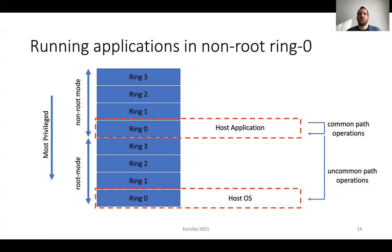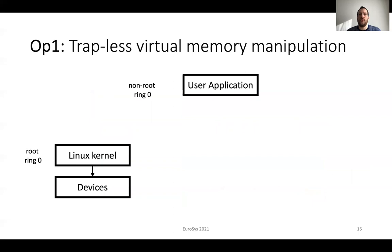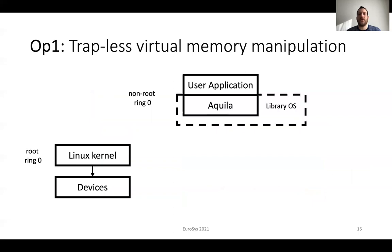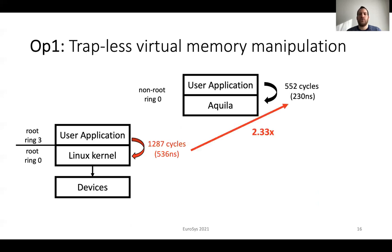Next, we provide more details on common and uncommon path operations. The first operation is about trapless virtual memory manipulation. Today, user applications run in root ring 3 and require a protection domain switch to ring 0 to access storage devices. We move user applications to non-root ring 0 and, combined with Akila, our library operating system handles all common path operations without the need for a protection domain switch. Akila also provides a way to handle uncommon path operations with a VM call to the host operating system. In this case, the hardware cost to serve a page fault is about 600 cycles, compared to traditionally about 1300 cycles. This results in a reduction of 2.33 times.